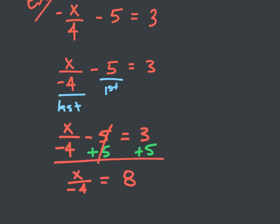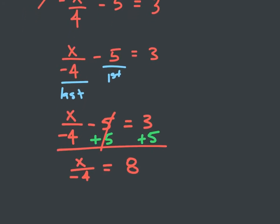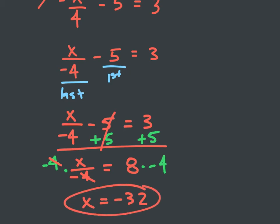From here I want to multiply both sides by negative four, since I'm dividing by negative four. Negative four divided by negative four divides out to one, so on the left side I'm simply left with x. Then eight times negative four is negative 32. So x equals negative 32.